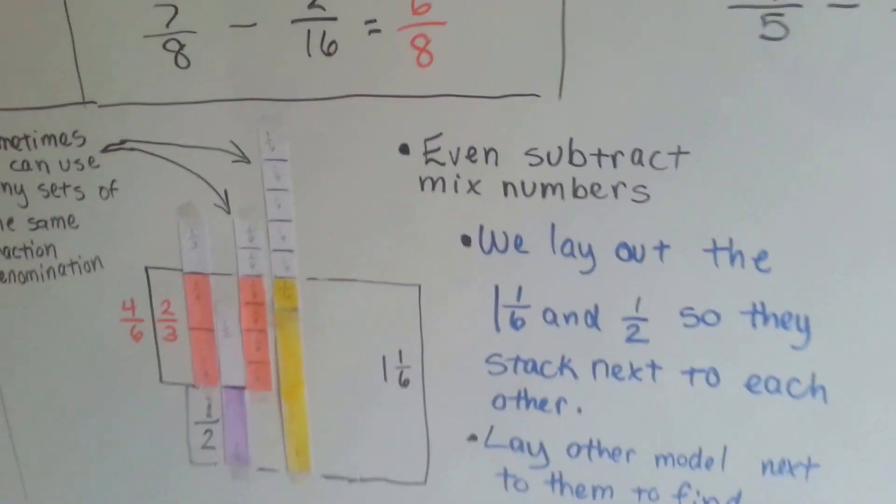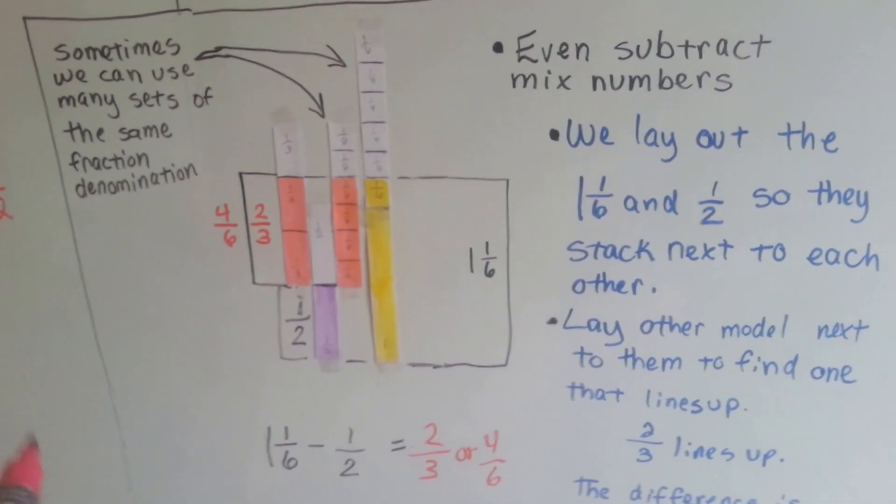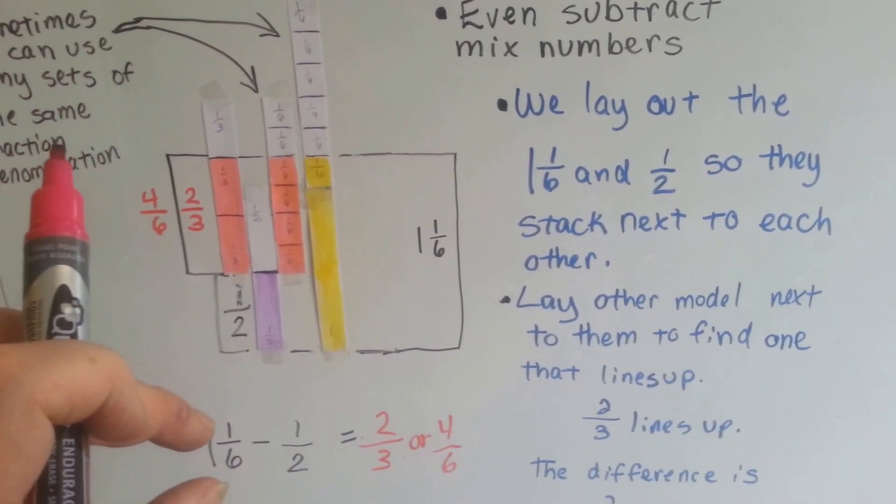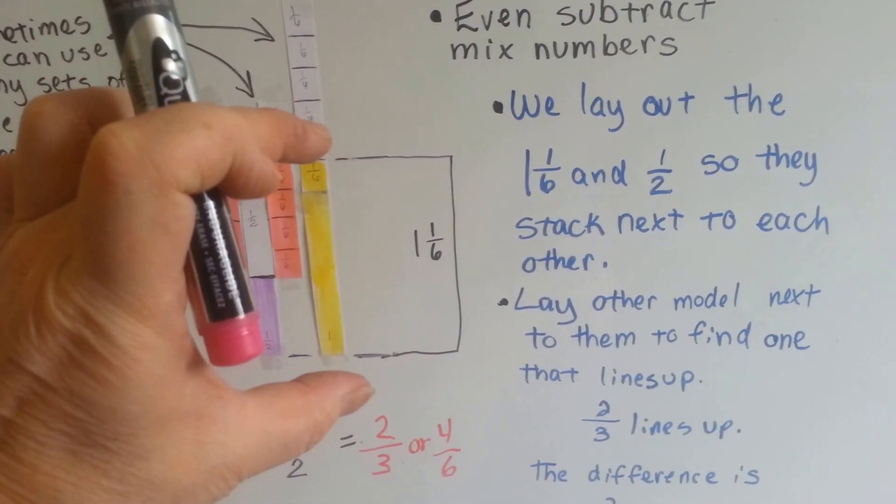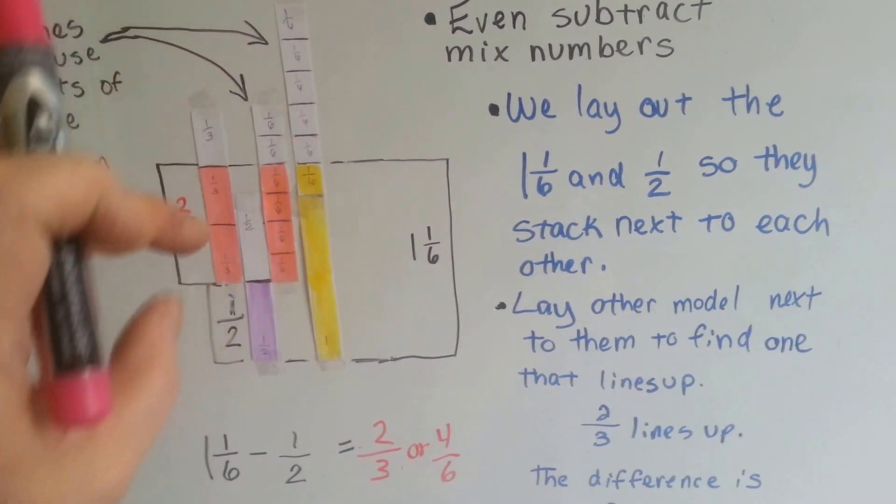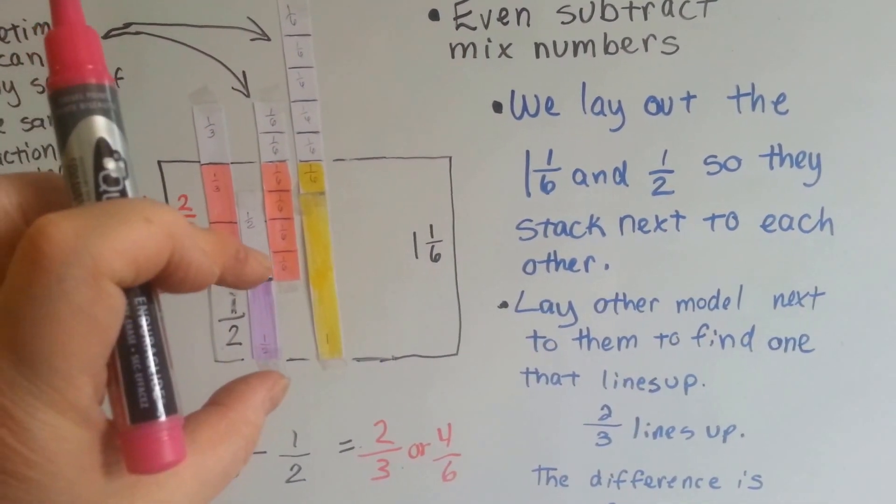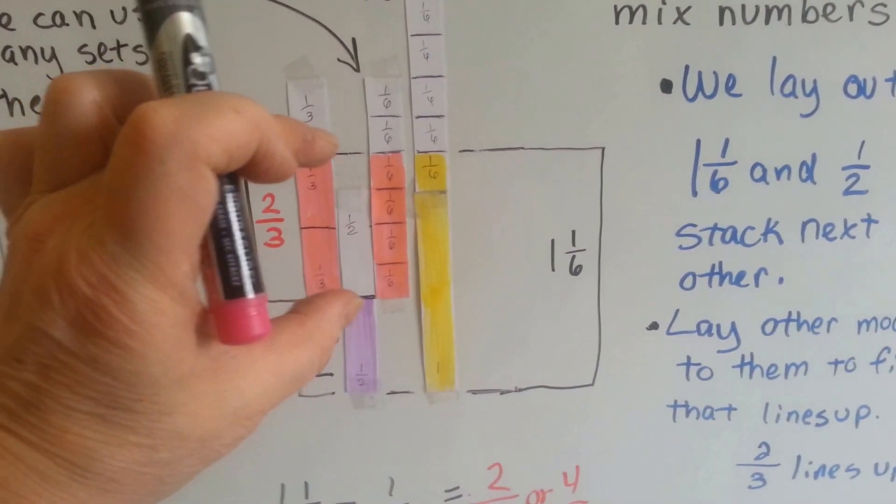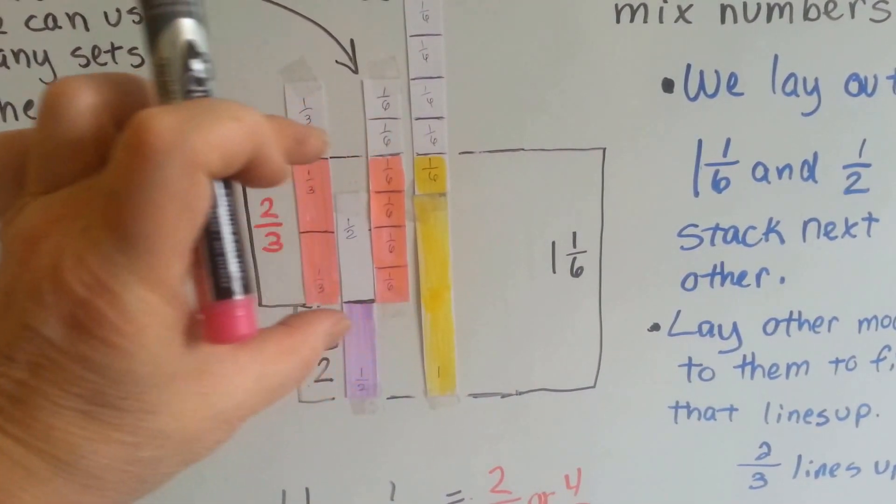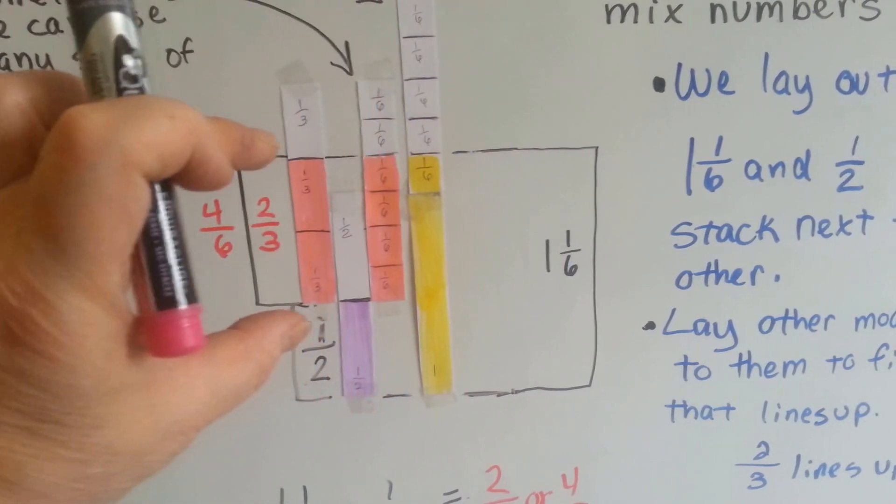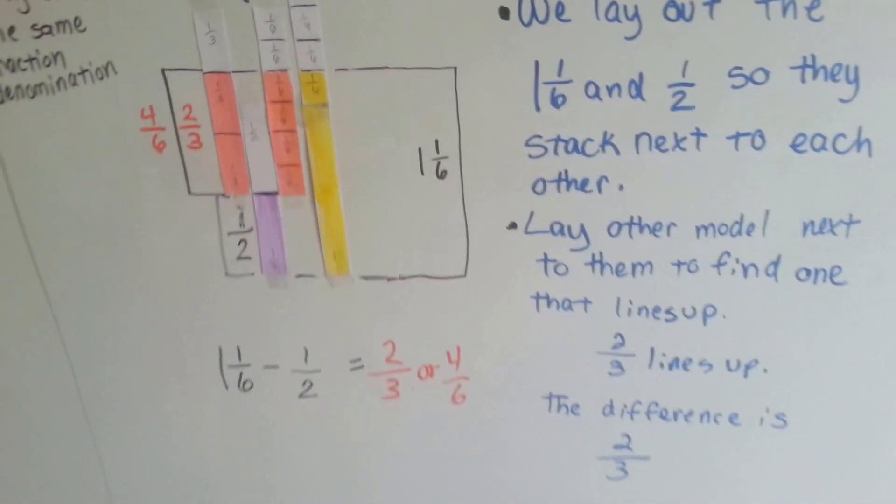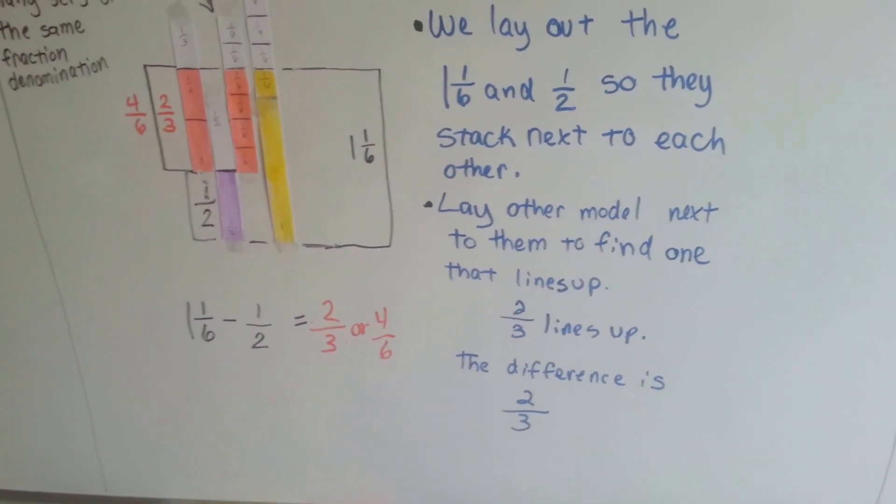We can even subtract mixed numbers. We can take a mixed number and take away a fraction. 1 and 1 sixth, this big yellow piece, is 1 with 1 sixth on top of it, minus this half. We can line up the thirds bar and the sixths bar and we can see that they line up perfectly, that it's either 2 thirds or 4 sixths. See? The difference is 2 thirds or 4 sixths.